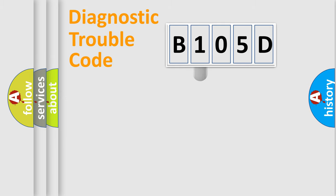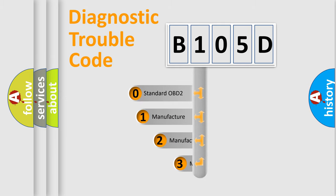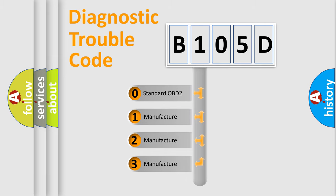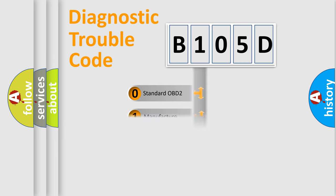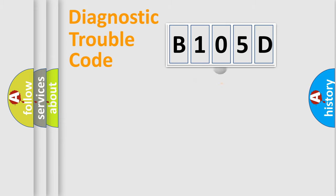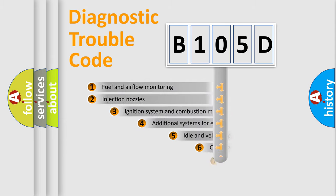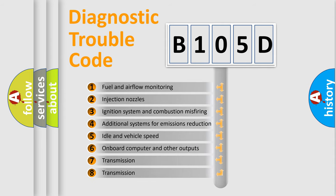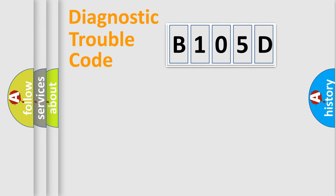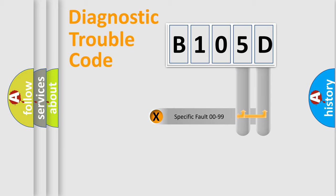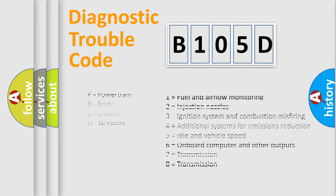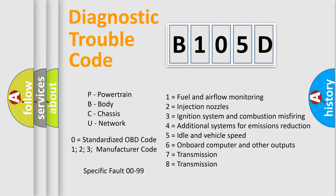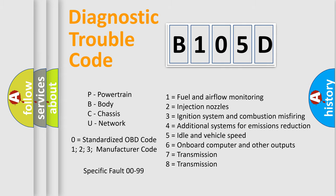This distribution is defined in the first character of the code. If the second character is expressed as zero, it is a standardized error. In the case of numbers 1, 2, or 3, it is a more manufacturer-specific expression of the car error. The third character specifies a subset of errors. The distribution shown is valid only for the standardized DTC code. Only the last two characters define the specific fault of the group. This division is valid only if the second character is expressed by the number zero.